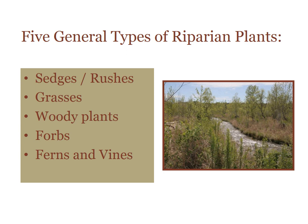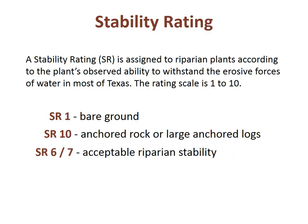Riparian plants are generally divided into five categories: sedges and rushes, grasses, woody plants, forbs, and ferns and vines. No single type is better or preferable to another — some riparian areas are highly functional without woody plants, and others are almost entirely woody plants and large trees. A stability rating, or SR, is assigned to riparian plants according to the plant's observed ability to withstand the erosive forces of water in most of Texas. The rating scale is 1 to 10, where SR1 equals bare ground, SR10 equals the strength of anchored rock, and SR6 or SR7 represents the minimum strength for bank stabilization.